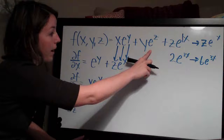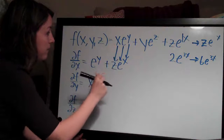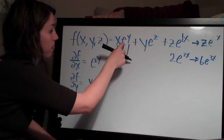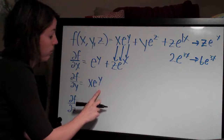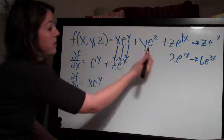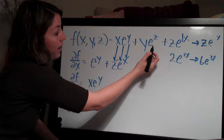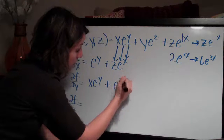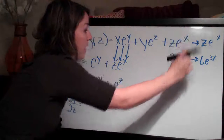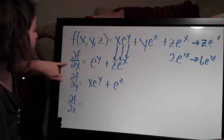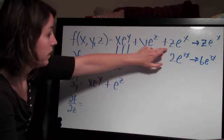Then we look at the second term, y e to the z. This is the same situation as the first term with respect to x — there we had e to a different variable and the single x variable; now we have e to a different variable and the single y variable, and we're taking it with respect to y. Just like e to the y was a coefficient on x and x dropped away leaving e to the y, here the y drops away and we're left with e to the z. So this is plus e to the z. The last term, z e to the x, has no y in it, so it becomes zero and we leave it off.